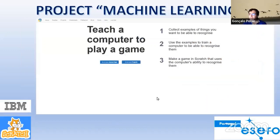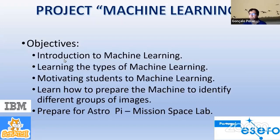Here is the beginning of machine learning of MIT, and the objectives for machine learning were also introduction, learning the types of machine learning, motivating students to machine learning, learning how to prepare the machine to identify different groups of images, and prepare for AstroPy Mission Space Lab.